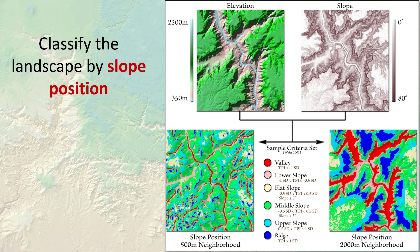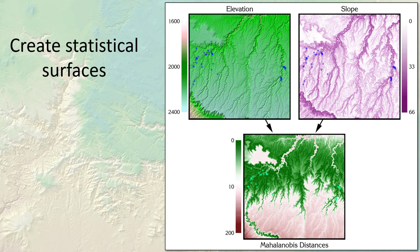This lets us find, for example, a ridge top down at the bottom of a valley, and it lets us analyze the way different phenomena might perceive the landscape — so a cougar would probably perceive the landscape at a different scale than a mouse, and you can analyze the landscape accordingly for those different animals. We can generate statistical surfaces. This is what we call a Mahalanobis distance — it defines the landscape in terms of how similar any point on the landscape is to some ideal combination of variables. For example, if we had a bunch of spotted owl locations, and at each location we knew the slope and the elevation, we can classify the entire landscape based on the similarity of slope and elevation to what the owls seem to prefer. This is useful for identifying potential areas where the animal might be found in the future — if you're going to survey for owls, you might do something like this to identify the most likely places to survey.